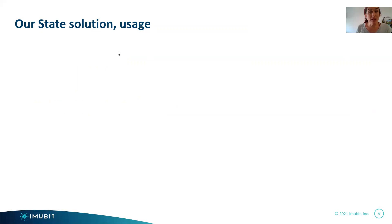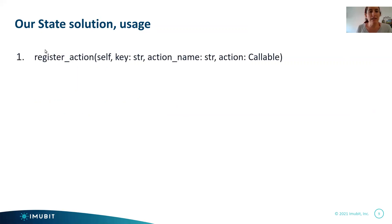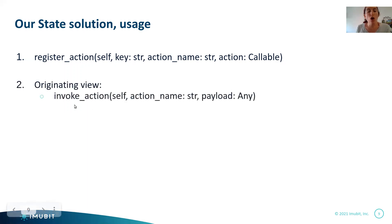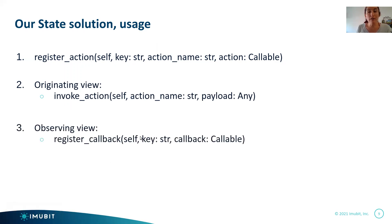Now let's detail the usage. The first thing you have to do is register an action. In our case, the action would be 'add_course'. You register an action on a specific key — in our case the key is 'courses', the action name is 'add_course', and you supply a callback that will be called when this action is invoked. Next, the originating view should call invoke_action with the registered action name 'add_course' and the payload, which is the new course. And the observing view — the schedule page — should call register_callback on the key 'courses' and supply a callback to be called when the courses list is updated.